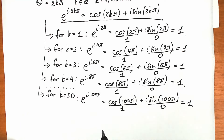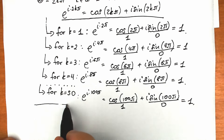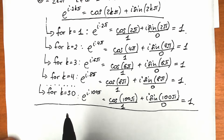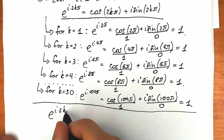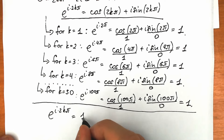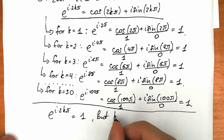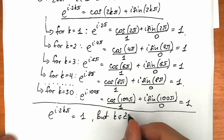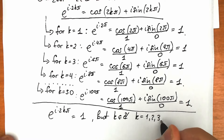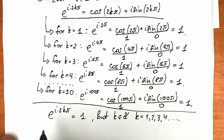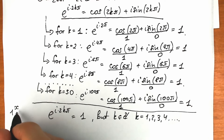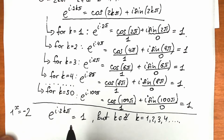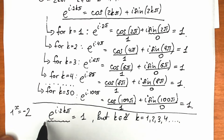So our key result is: e to the power i times 2kπ equals 1, where k is an integer. Now, in the beginning we had 1 to the x equals minus 2. Since this expression equals 1 when k is an integer, we can substitute e to the power i times 2kπ in place of the 1.